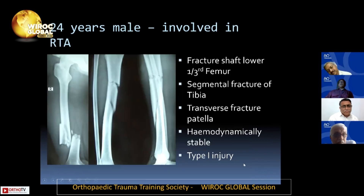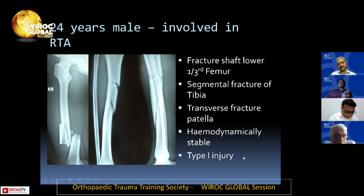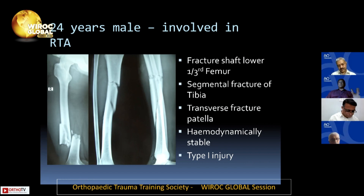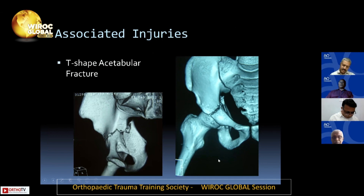Here is a case: a 24-year-old male involved in a road traffic accident — high energy trauma. He had a fracture of the shaft to lower one-third of the femur with a butterfly fragment, a segmental tibial shaft fracture, and a transverse fracture of the patella. The patient was hemodynamically stable and this was a Type 1 injury. As this was high-velocity trauma, we also looked for associated injuries — this patient had a T-shaped acetabular fracture, which had to be taken into consideration for patient positioning during surgery.